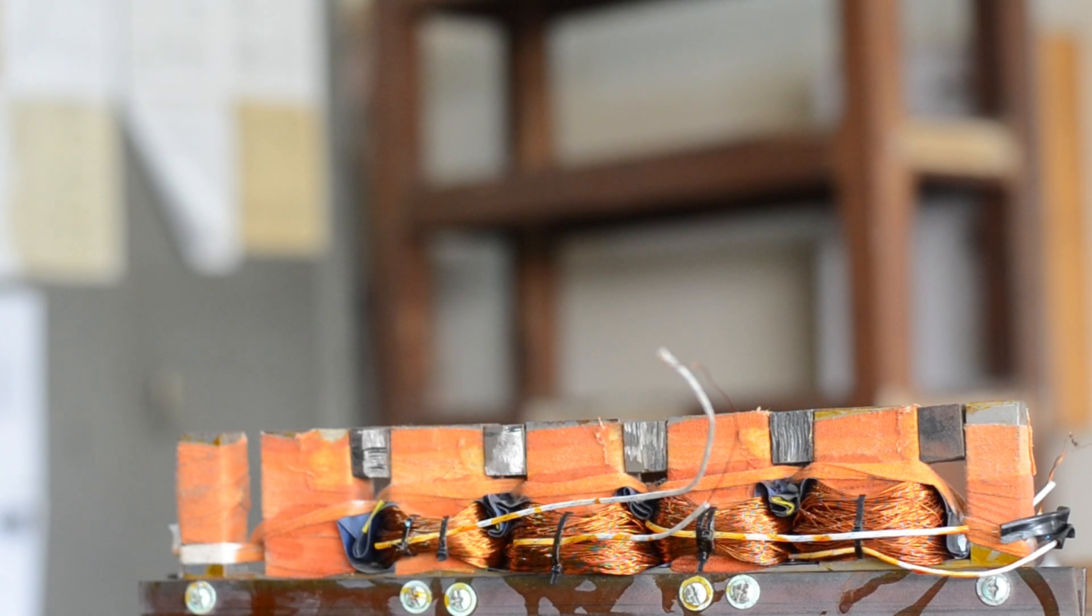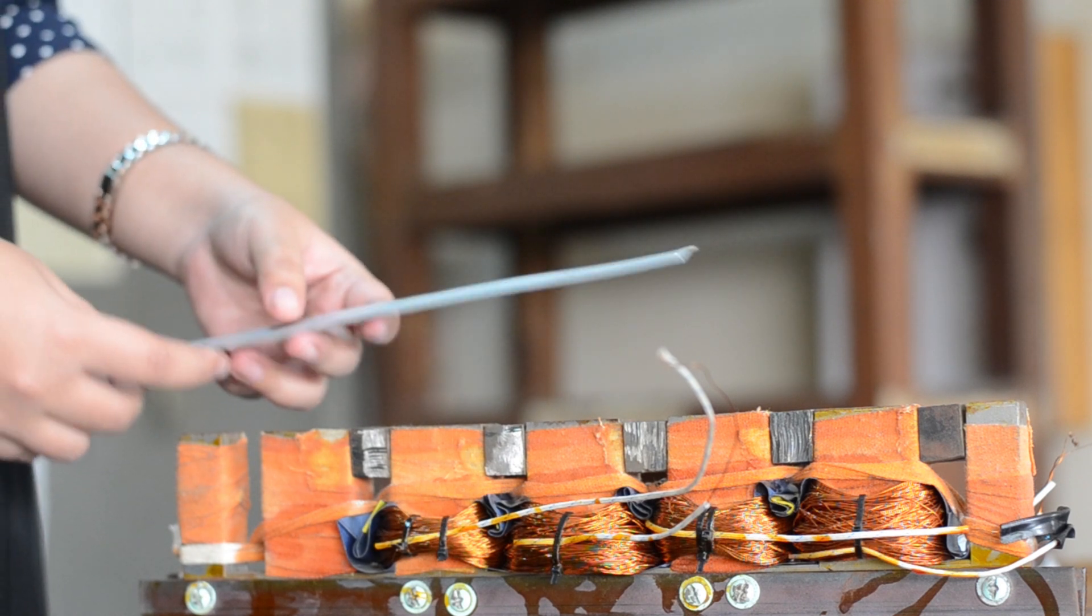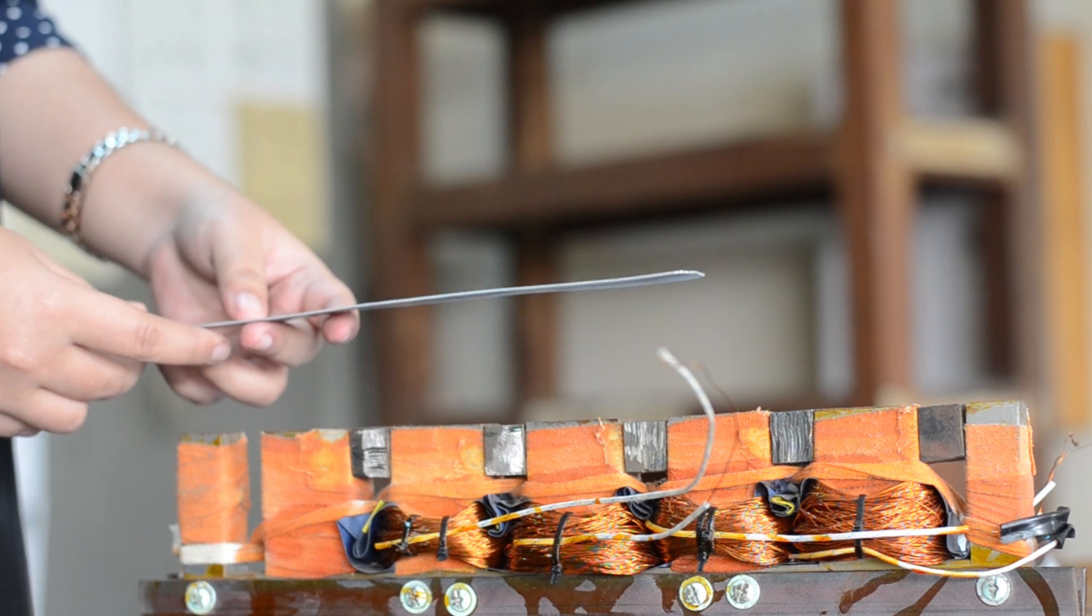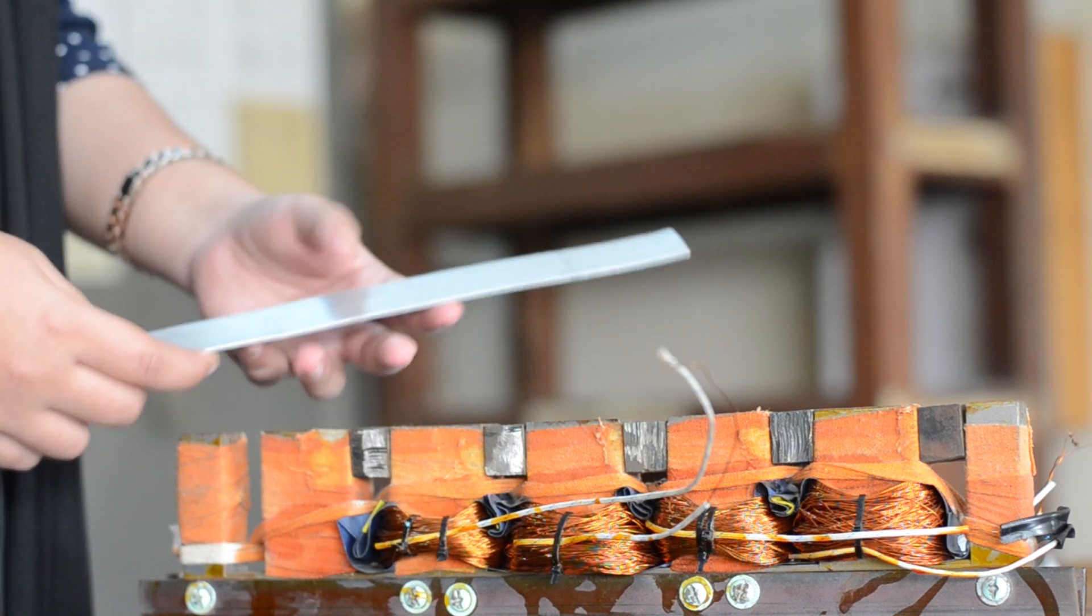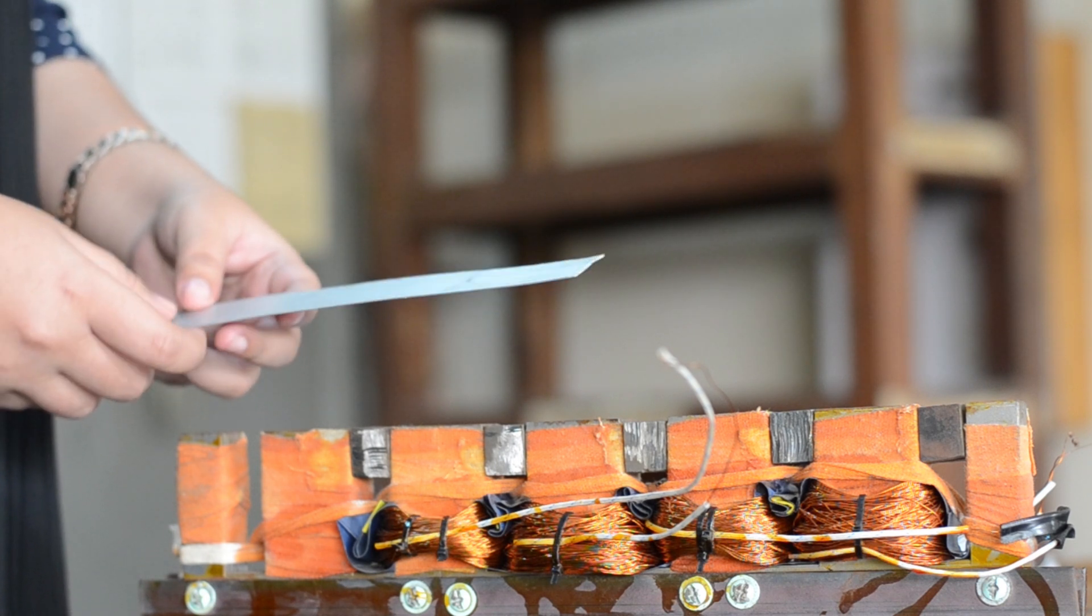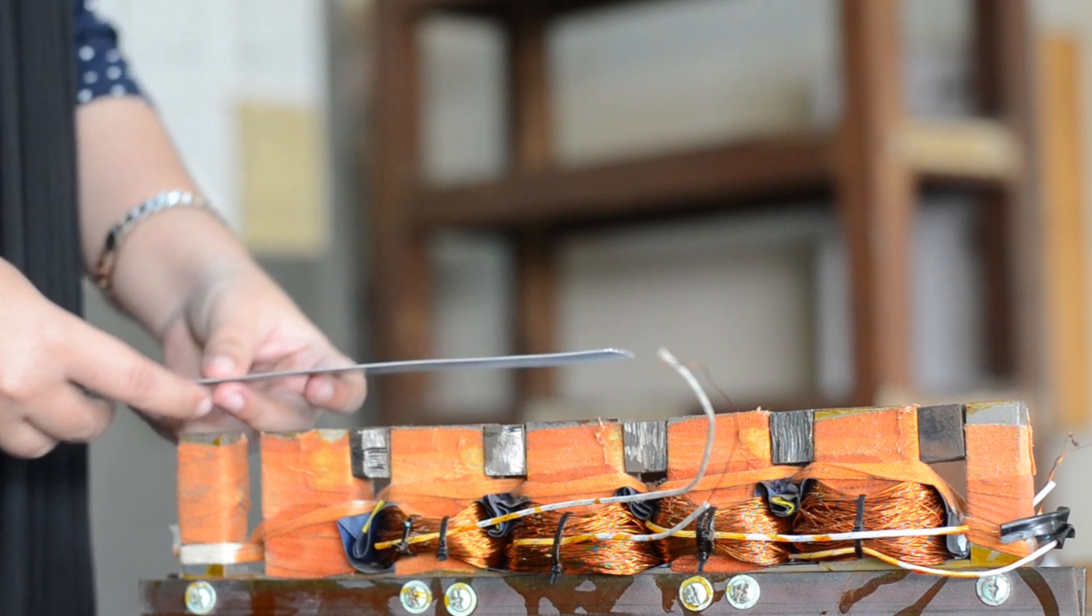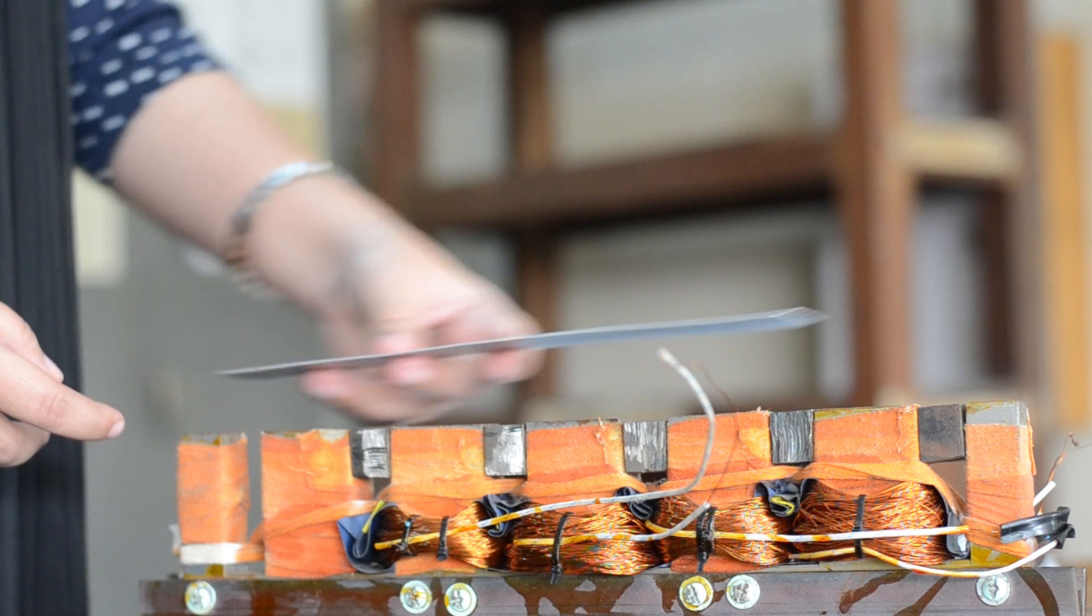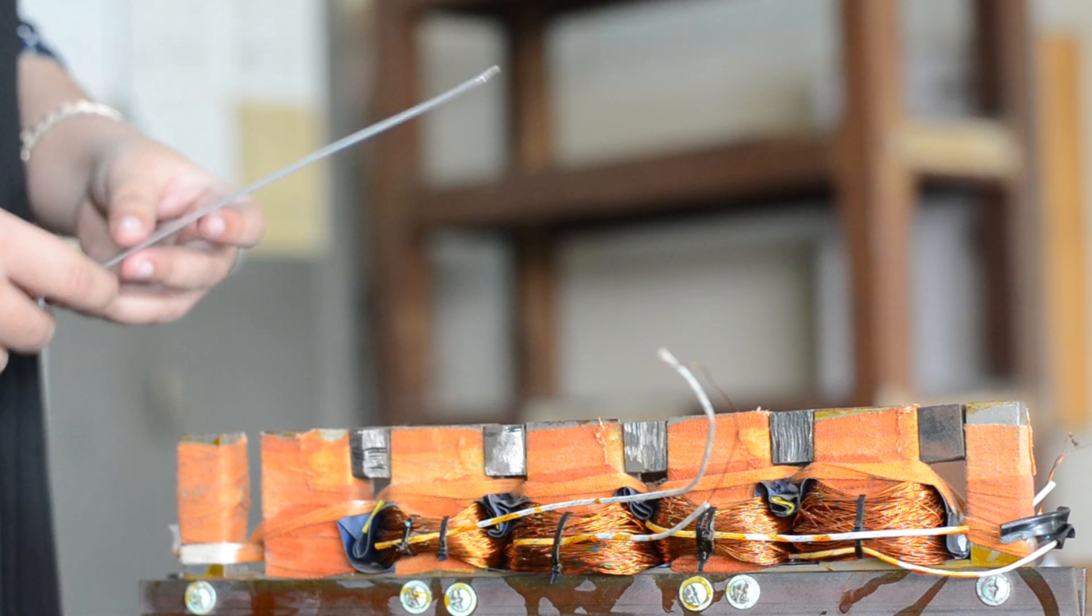This is a motor that we built for our project. Now a linear motor is conventionally powered by a three-phase supply. When three-phase AC voltage is supplied to the windings, it creates a rotating magnetic field. This magnetic field induces an electric current in the rotor. Because of this current, another magnetic field is produced in the rotor. These two fields interact with each other and produce a linear thrust along the length of the motor. This is how a conventional motor works.